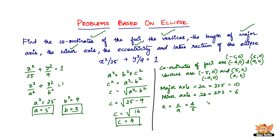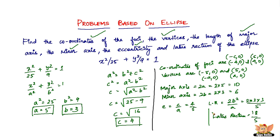Finally, the length of the latus rectum is given by 2b² / a = 2 × 9 / 5 = 18 / 5. So the length of the latus rectum is 18/5.